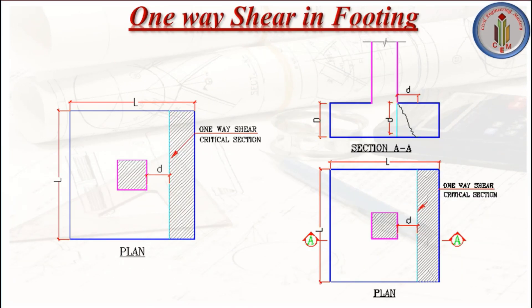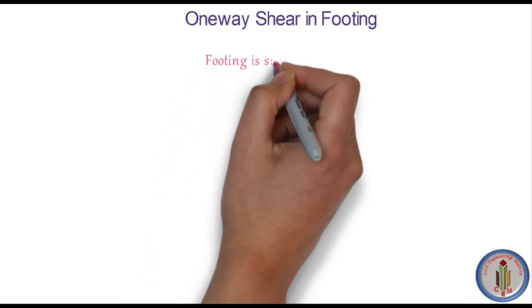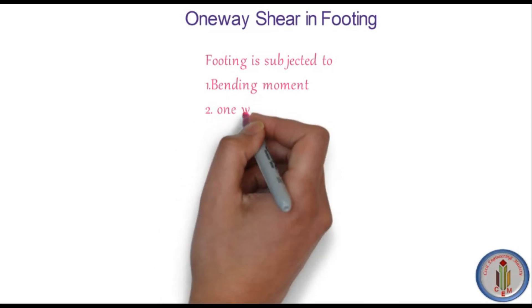Hello friends, welcome back to Civil Engineering Mastery. One-way shear is one of the major critical elements in footing, so today in this video let's discuss in detail what is one-way shear, how it occurs in footing, and how we resist it. Footing is mainly subjected to bending moment, one-way shear, and two-way shear.